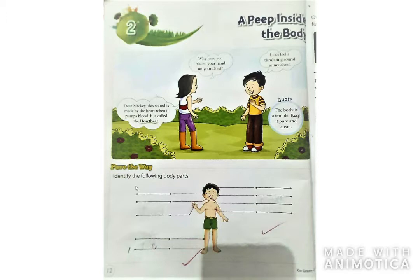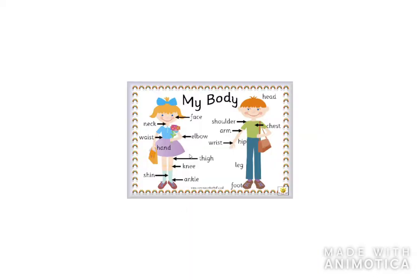Must identify the following body parts. Here is given one picture and you will identify and write the name of body parts. आपको identify करके write करना है body parts name. You have also read in class first, but I am giving you one picture — it is not given in your books. My body: head, chest, shoulder, arm, hip, wrist, leg, foot, ankle, shin, knee, thigh, hand, waist, neck, face, elbow.